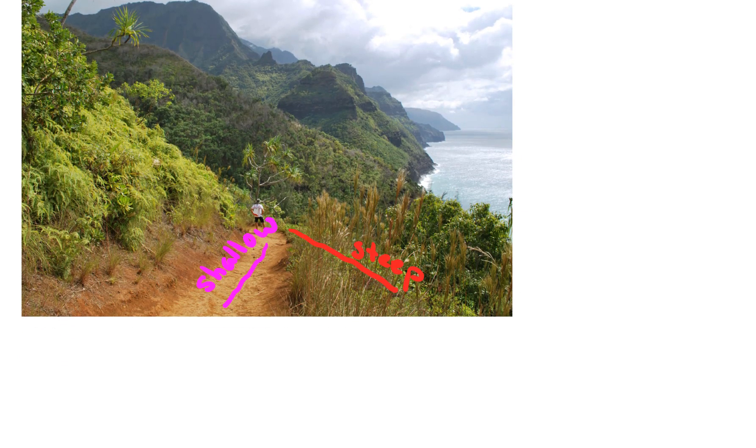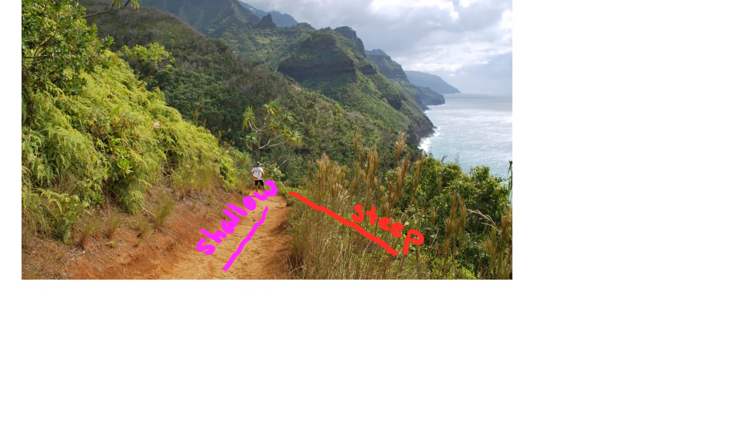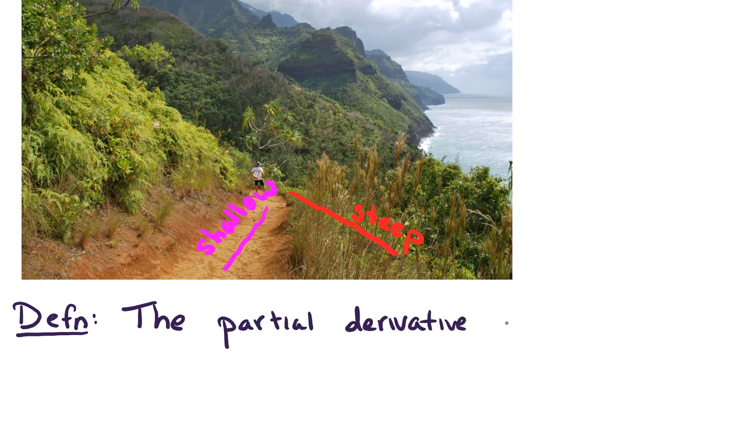Okay, let's make this more precise. So I'd like to give you the definition of a partial derivative. The partial derivative of a function f, the partial derivative of f with respect to x at a point (a,b) is given by the following.